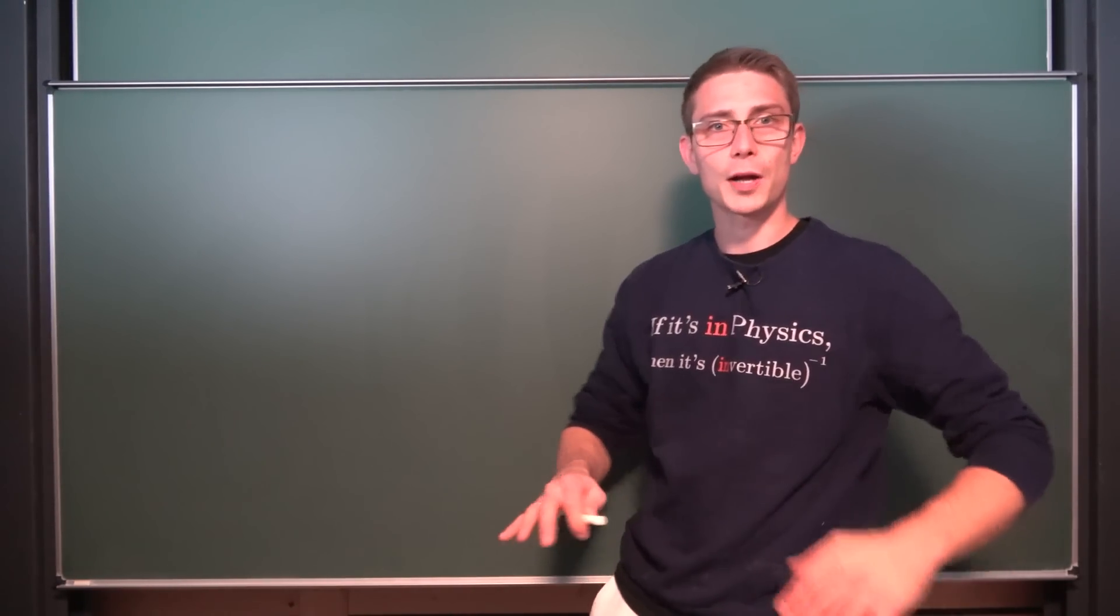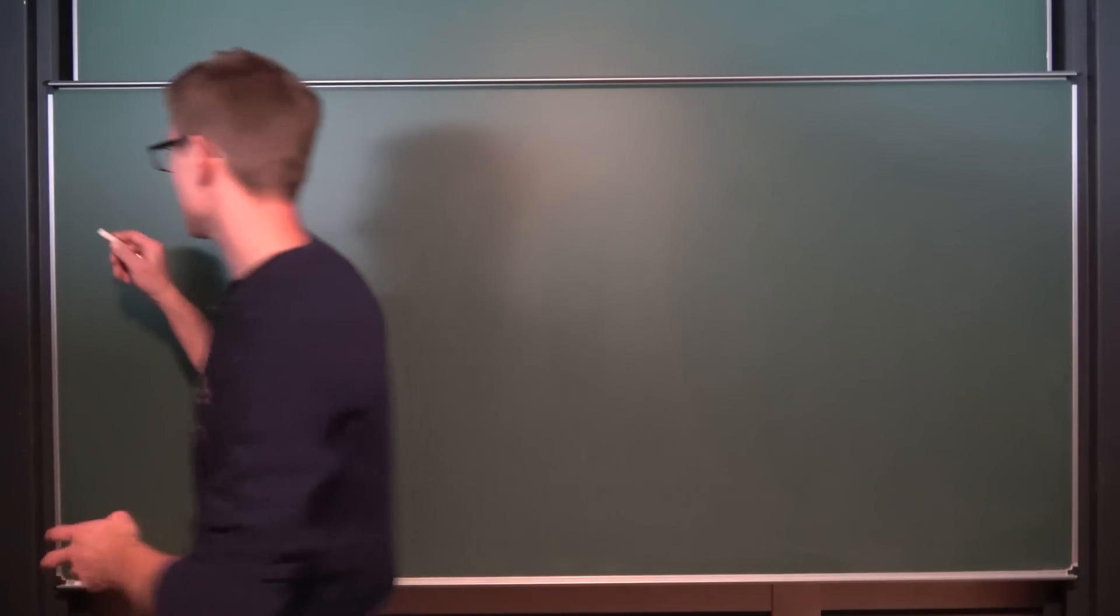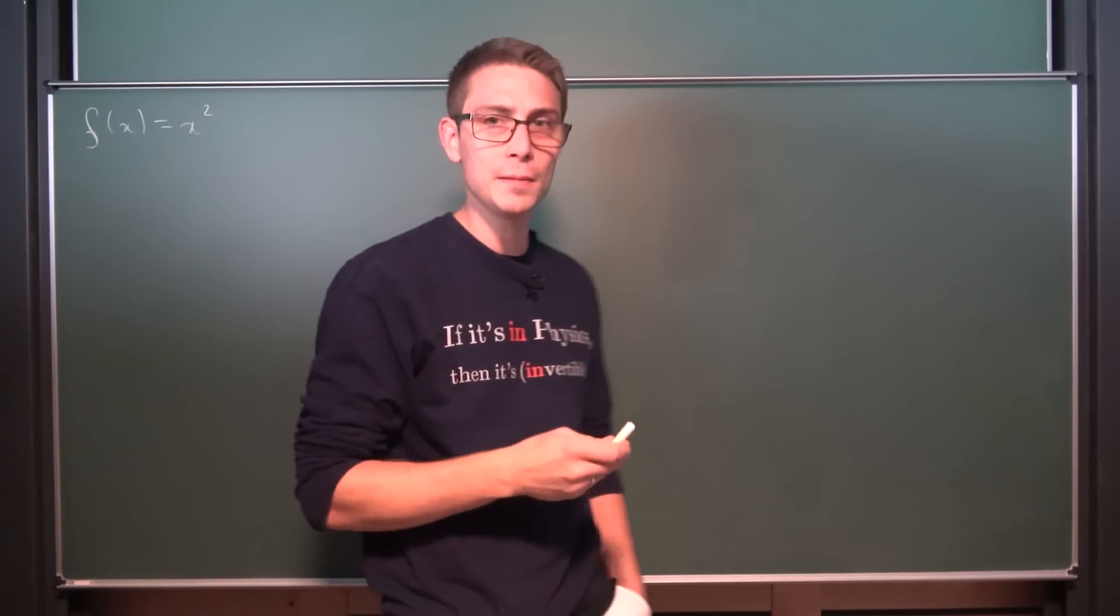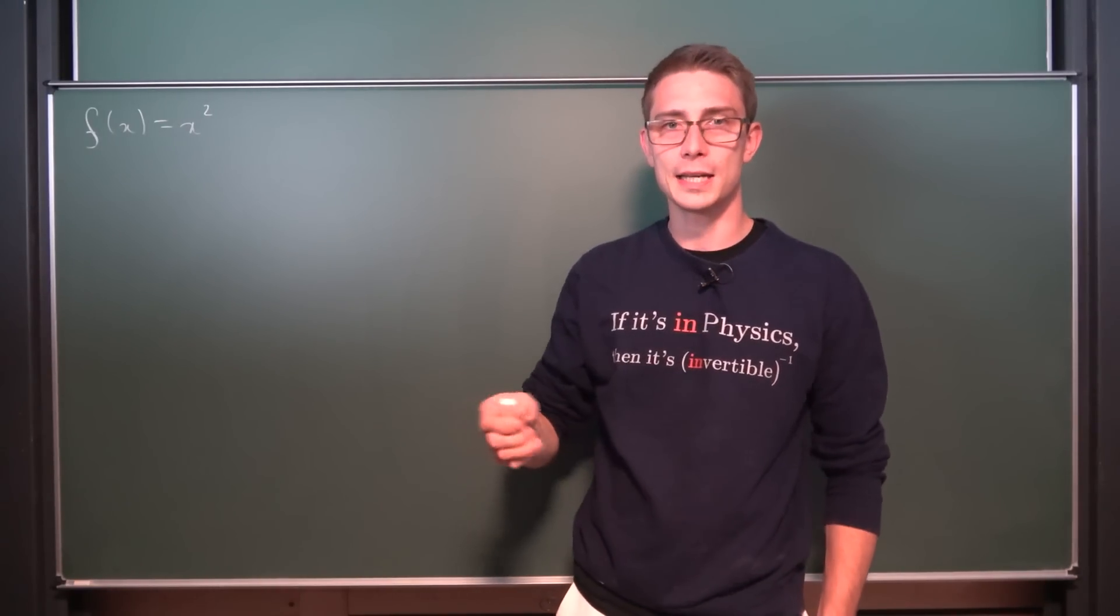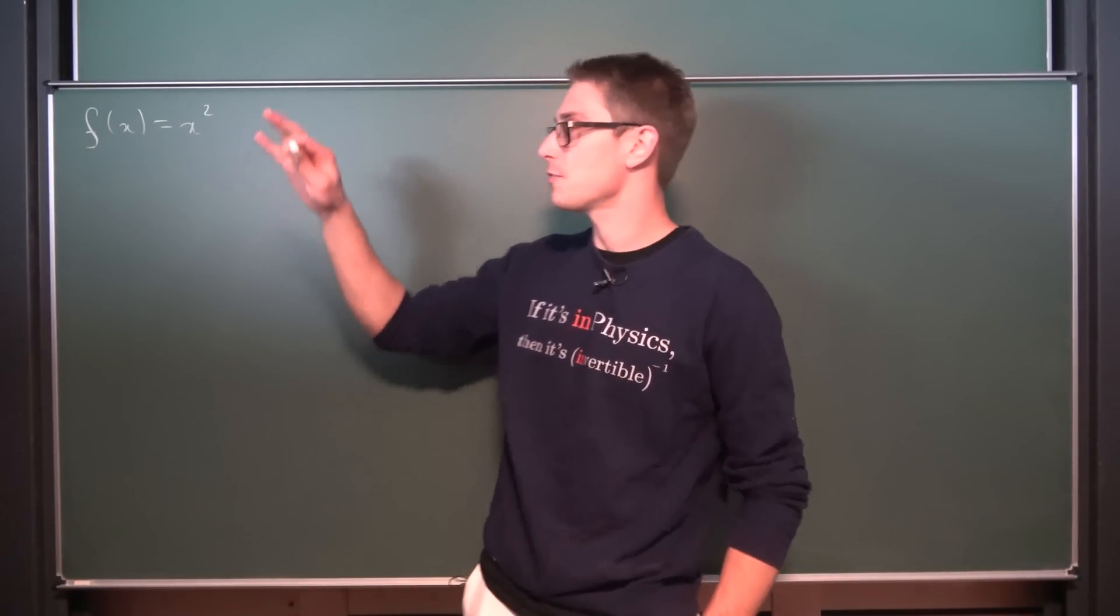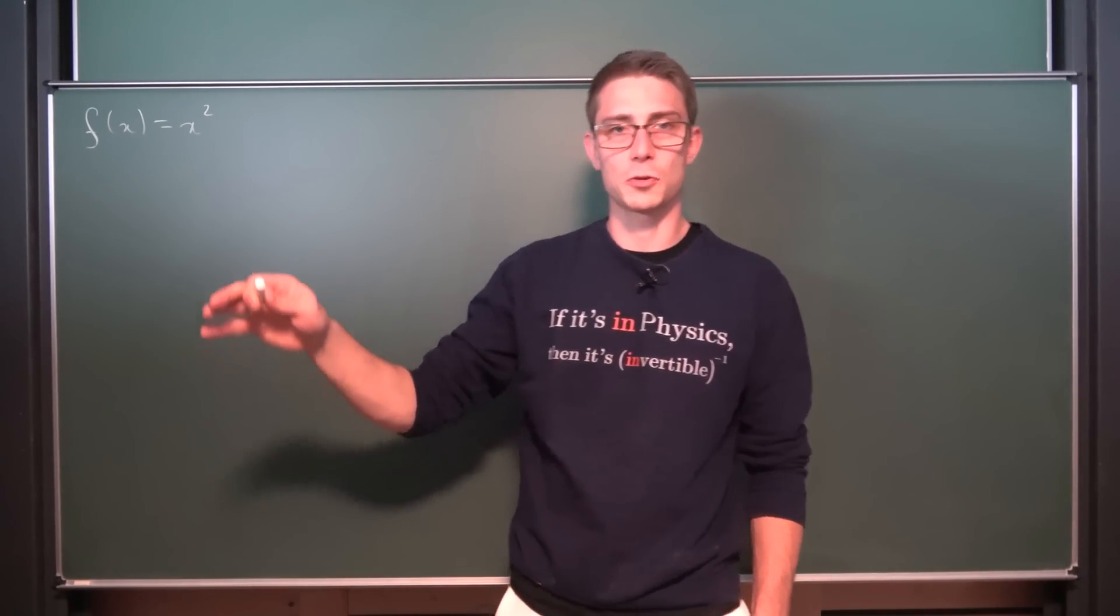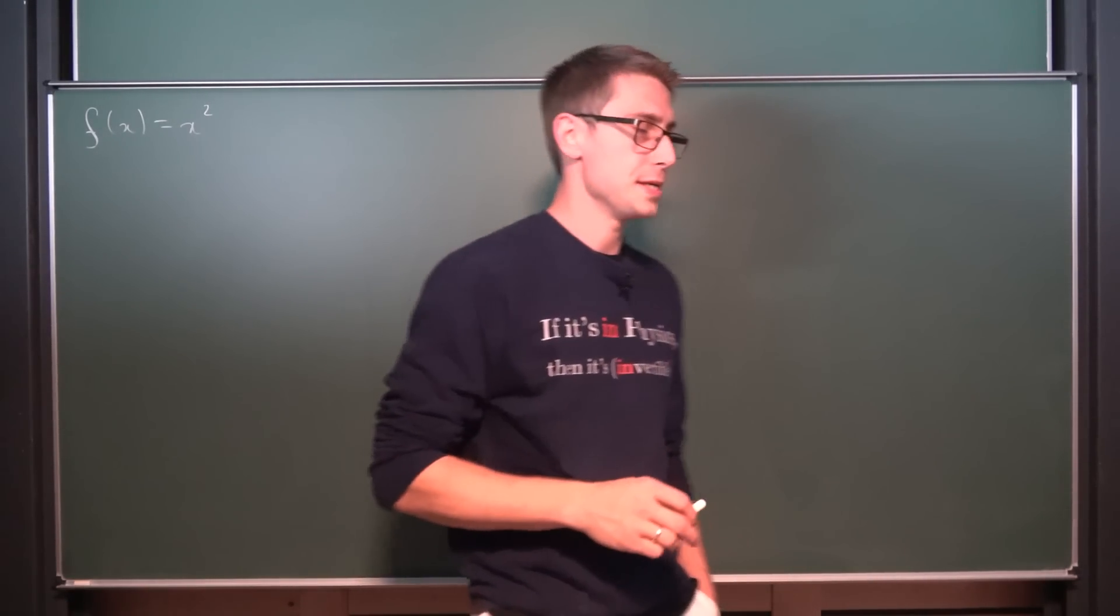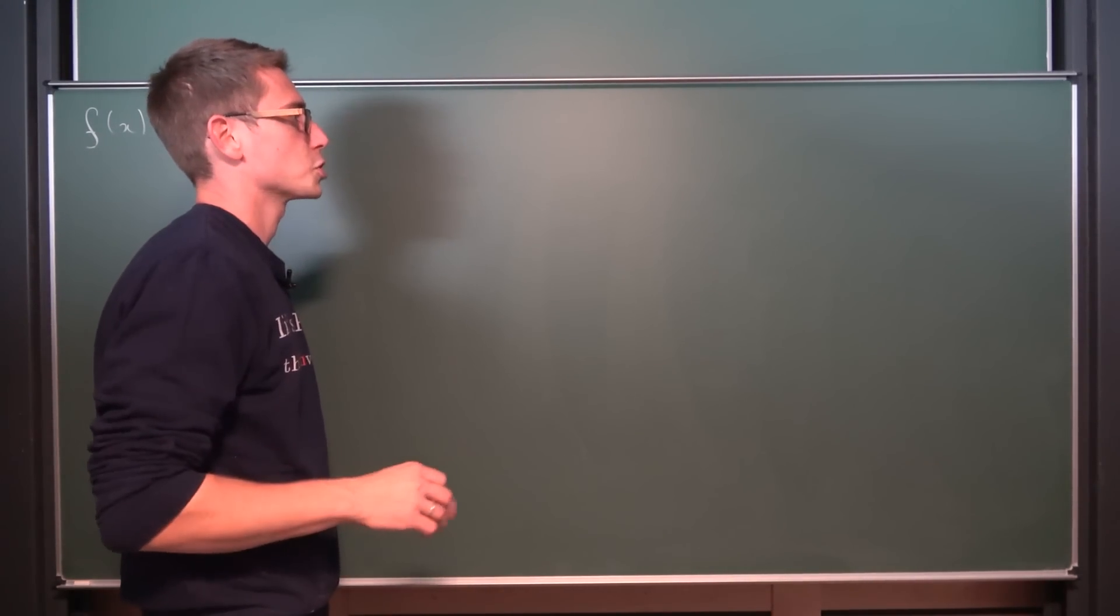Now at first we are going to keep it easy and take a look at just the parent function f of x being equal to x squared. Just a simple monic polynomial of second degree, and at the very end once we get a definition for that, we are just going to translate it up, down, left, right.